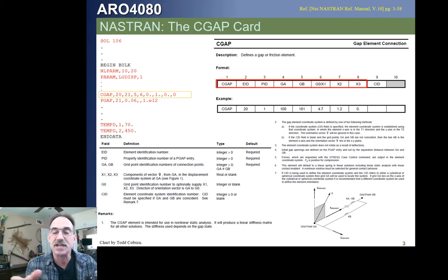So just like we use CRODS or CBEAMs or whatever, this is a CGAP. It calls out an element connectivity between two nodes. Okay, so it's got an ID, and then we're going to call out what property, what gap properties are going to be with the PID card in field three. We're then going to attach two nodes. We're going to put one of them in GA and one of them in GB in fields four and five.